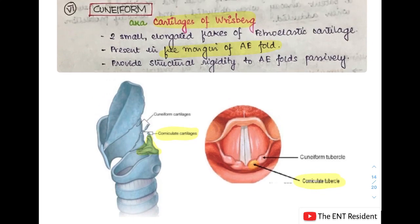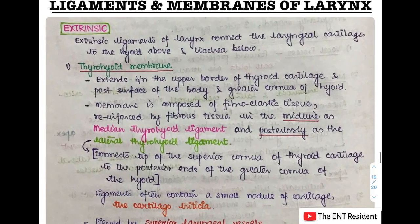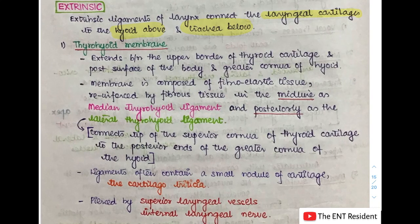That covers all the laryngeal cartilages — three unpaired and three paired. Next are the ligaments and membranes of larynx, which can be extrinsic or intrinsic. Extrinsic ligaments connect the laryngeal cartilages to structures outside the larynx: the hyoid bone above and the trachea below. The first important extrinsic structure is the thyrohyoid membrane, extending from the upper border of the thyroid cartilage to the body and greater cornu of the hyoid bone. It is composed of fibroelastic tissue and is reinforced as the median thyrohyoid ligament in the midline and the lateral thyrohyoid ligament posteriorly.